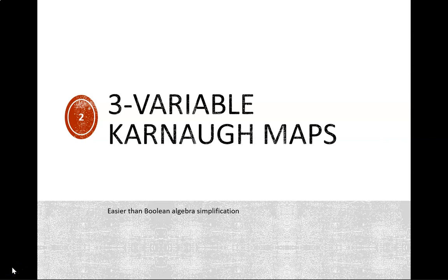If K-maps are more efficient, then why did we learn the Boolean algebra rules first? Those rules are mathematically rigorous and explain why simplification steps are logically true. If we jumped straight to K-maps, then we could successfully simplify equations, but we wouldn't understand why.